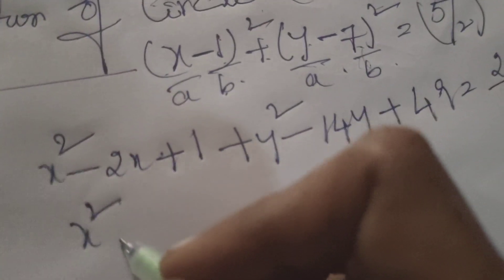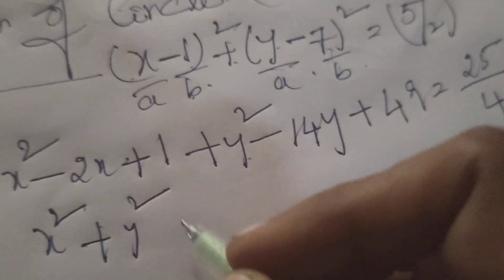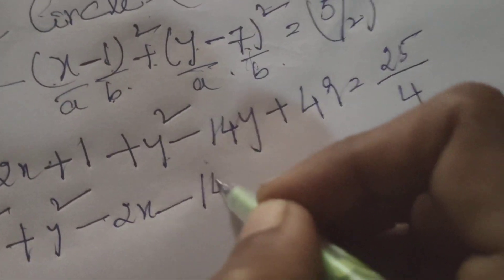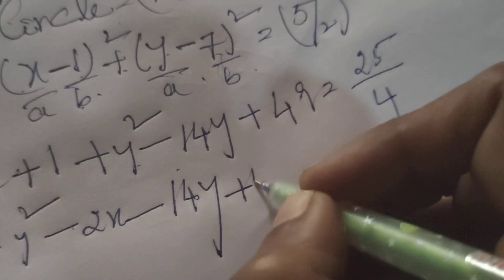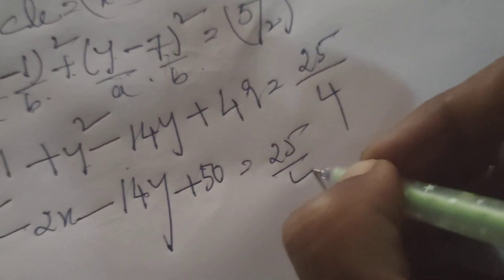Therefore x² + y² - 2x - 14y, 49 plus 1, 50 equals to 25/4.